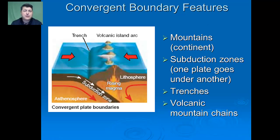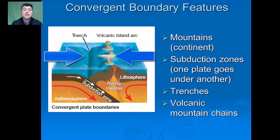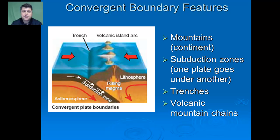The next major boundary type is called a convergent plate boundary. When you have a convergent plate boundary, the two plates actually smash into each other. If it's two continental plates, because they're both less dense, they lift up forming mountains. If we have an oceanic plate and a continental plate smashing into each other, the oceanic plate, because it's more dense, will subduct under the continental plate, forming trenches.